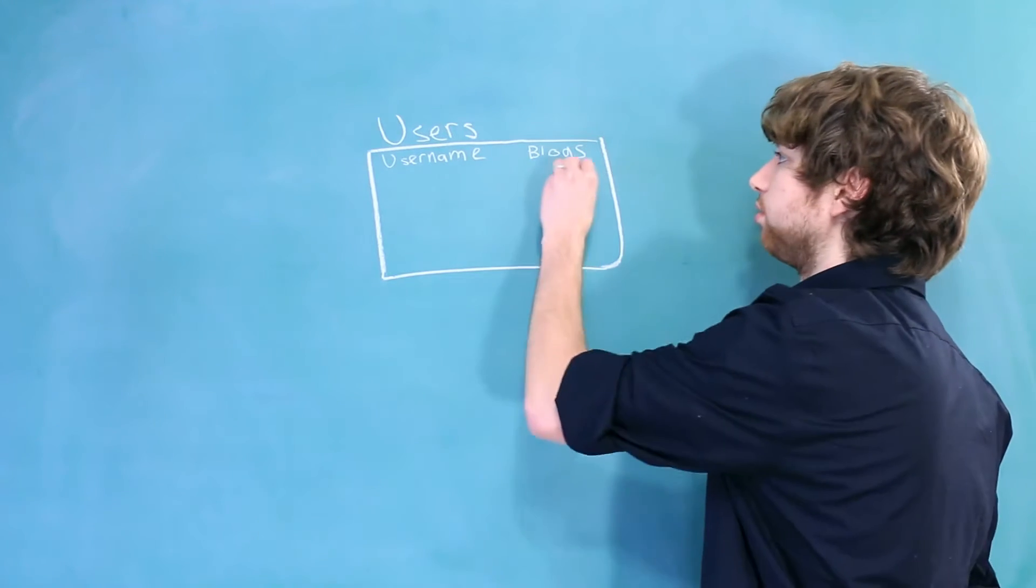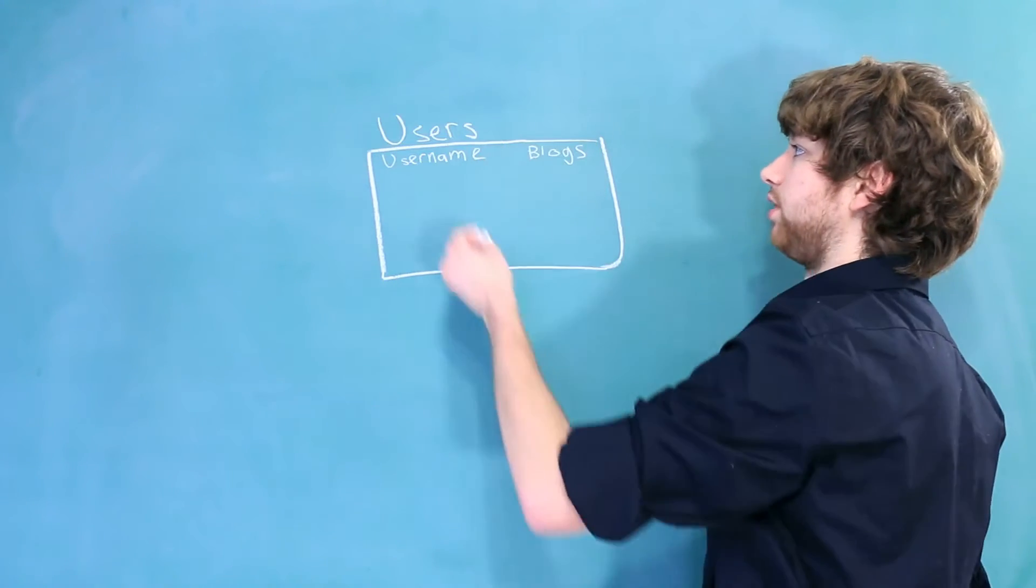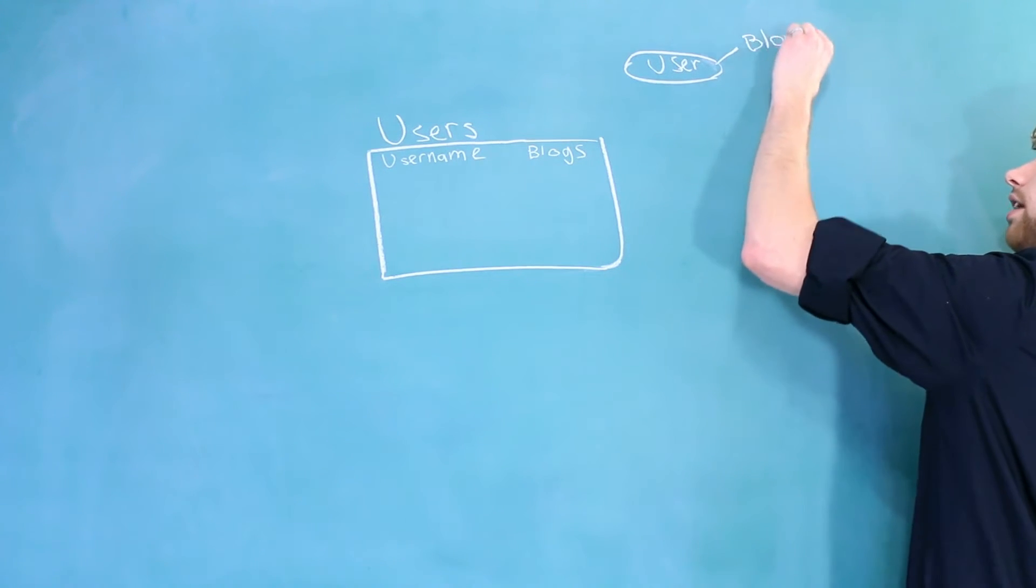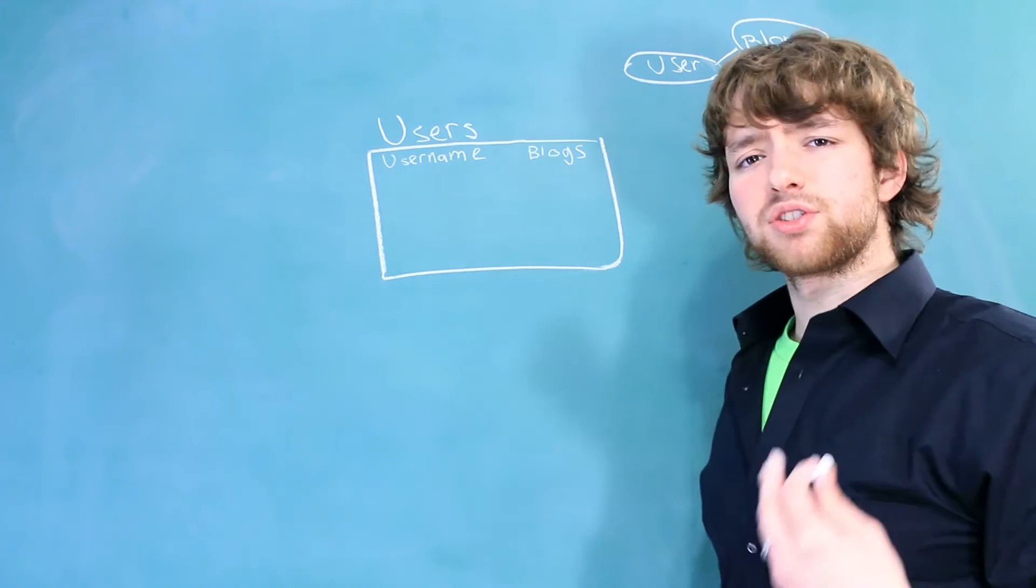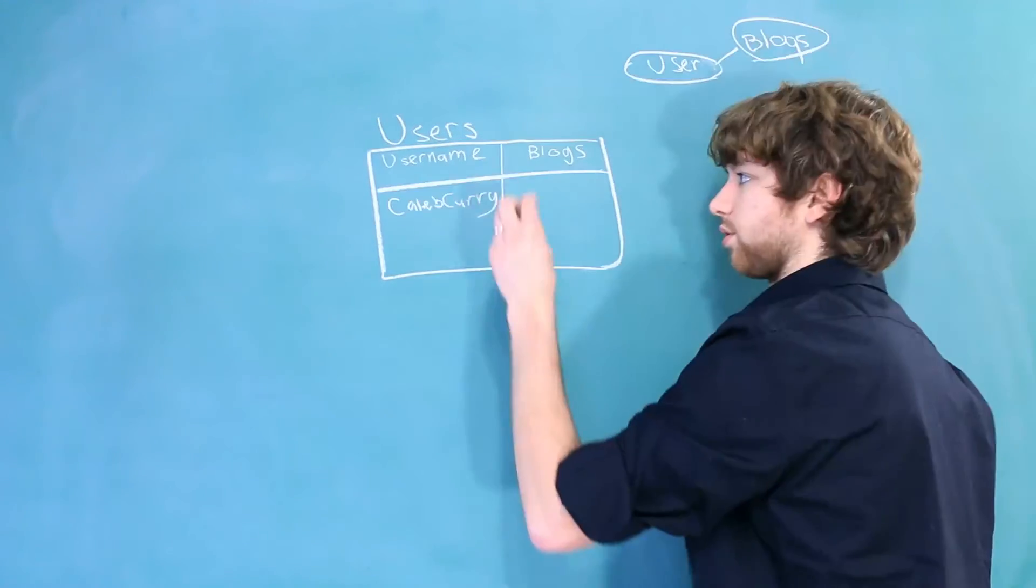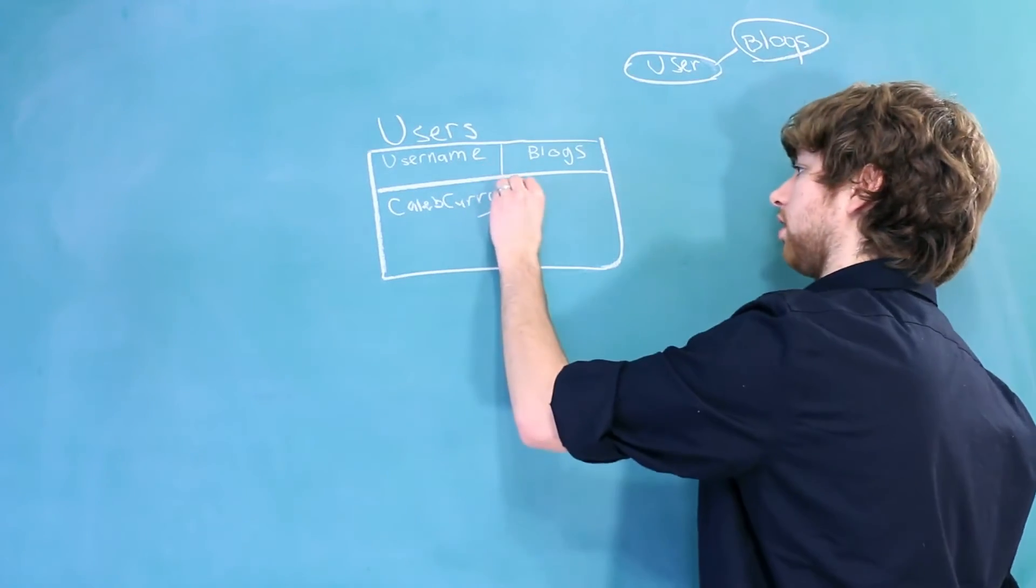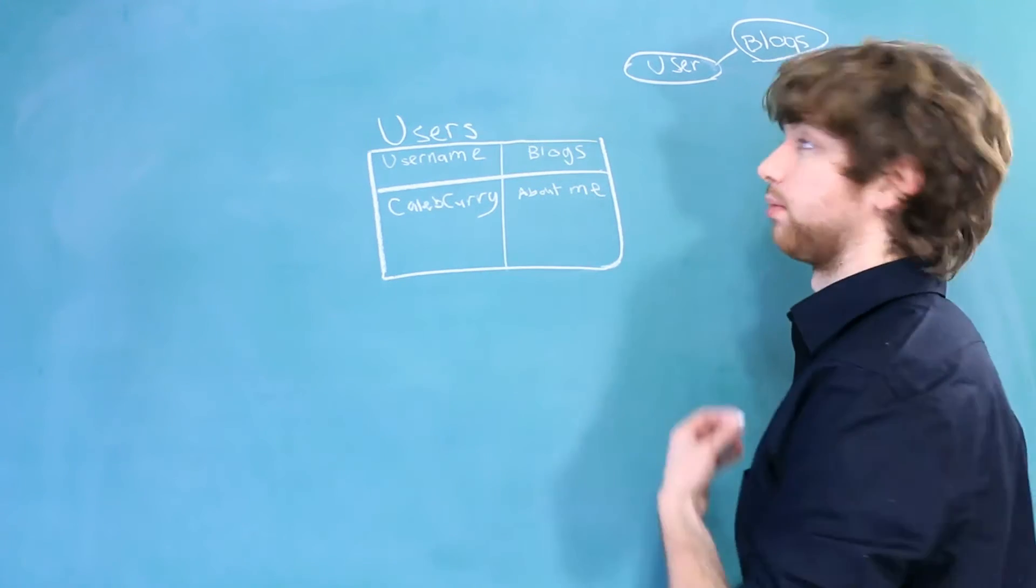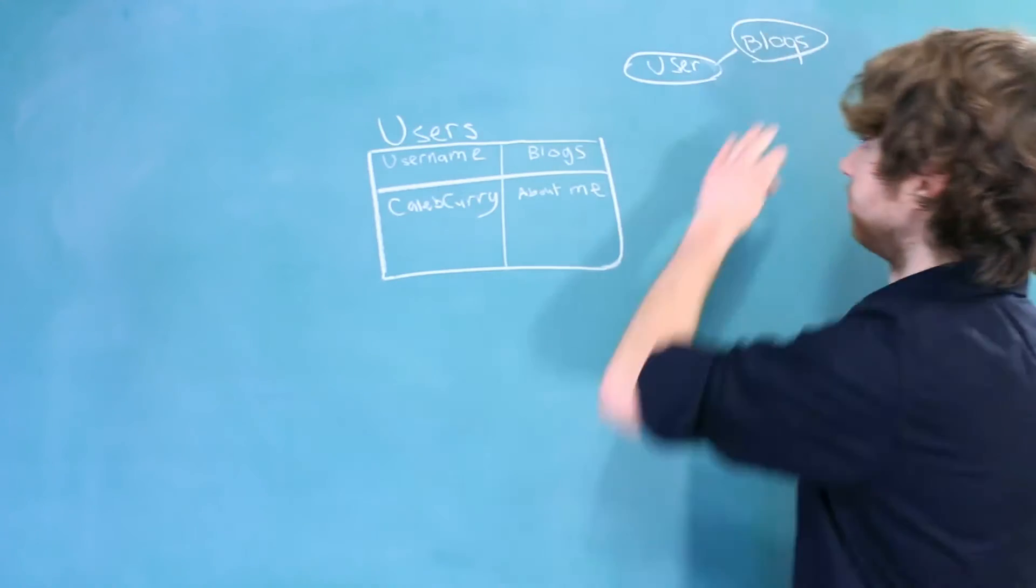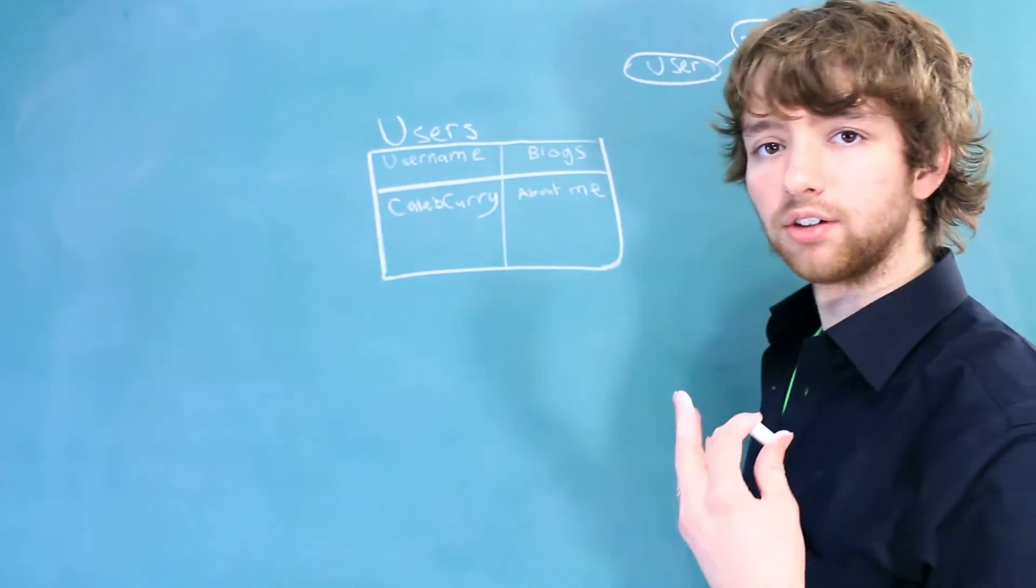As you can see, we have the blogs as an attribute of the users. So you can think users as the entity, and then we have blogs as the attribute. And then you would just store the content of the blog inside of this column. So Caleb Curry posted a blog about me, and then I told my life story. Why is this a bad thing? For one, it doesn't give a separation of the attributes for the blogs.